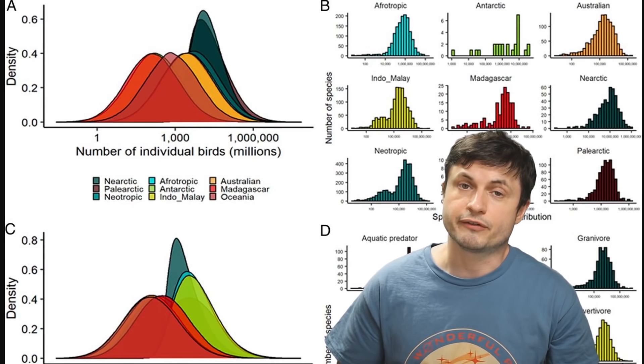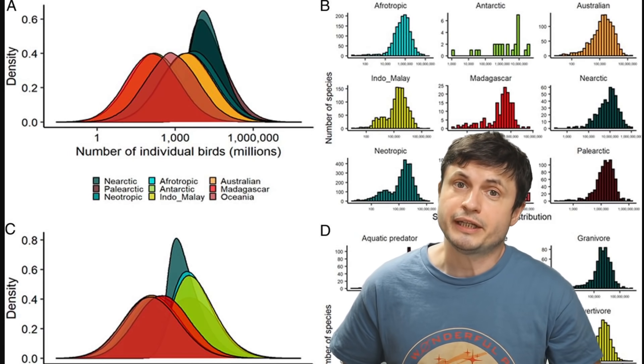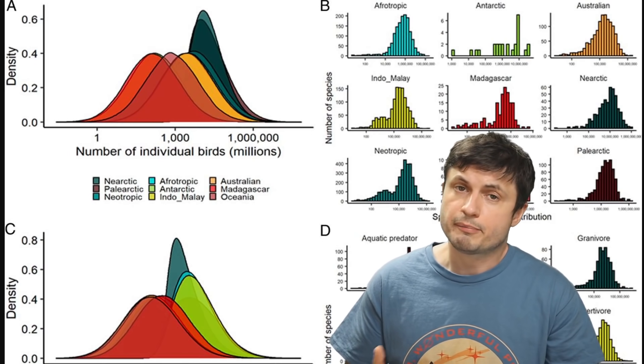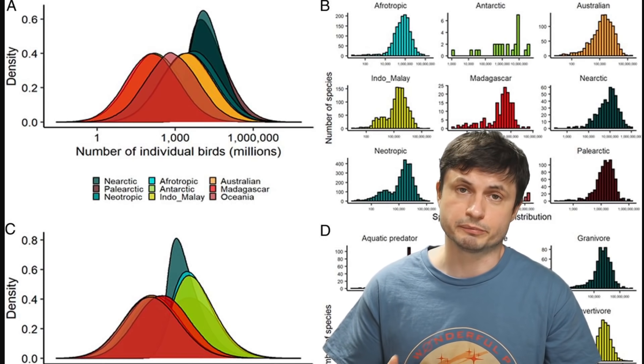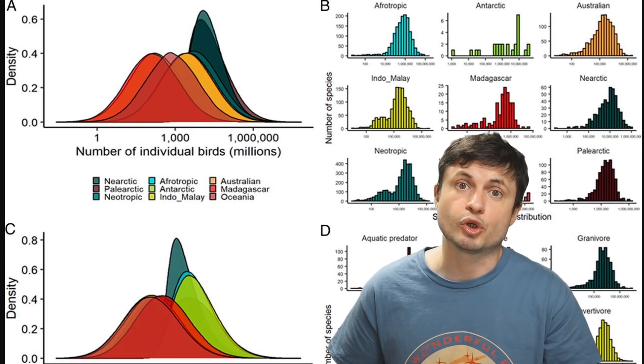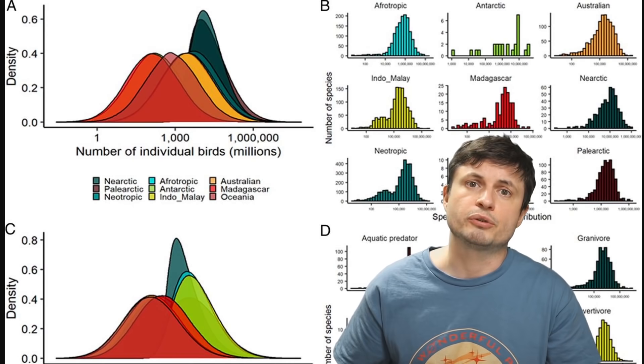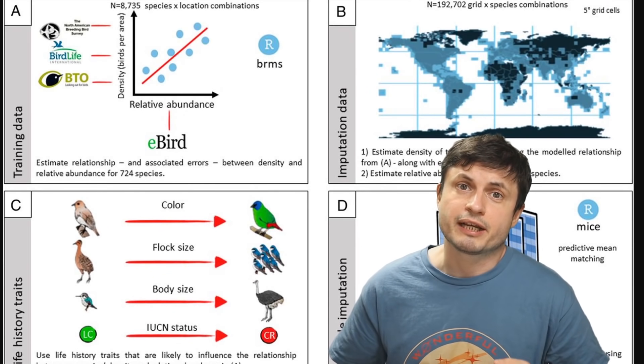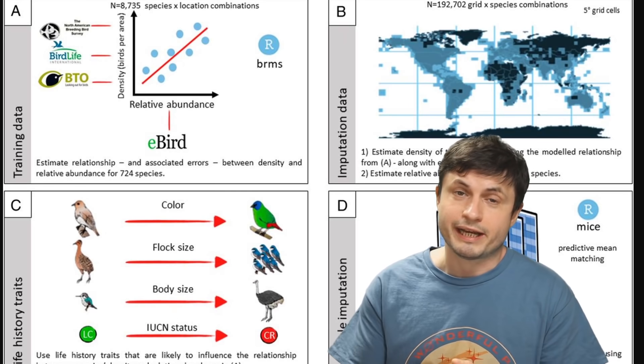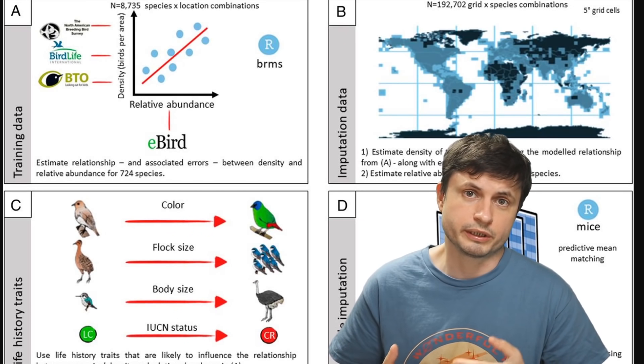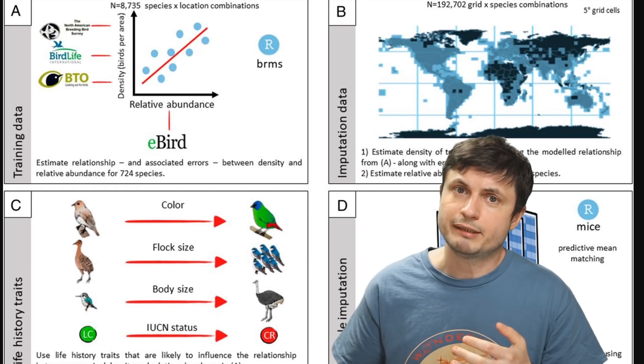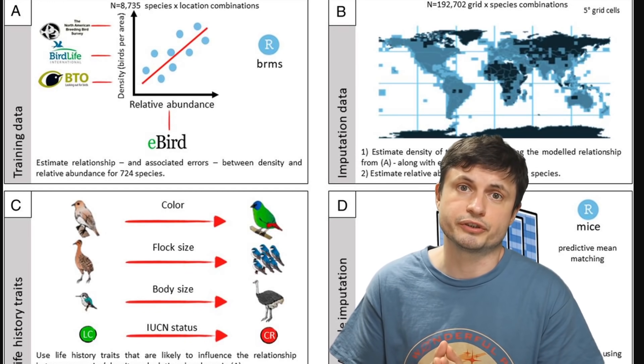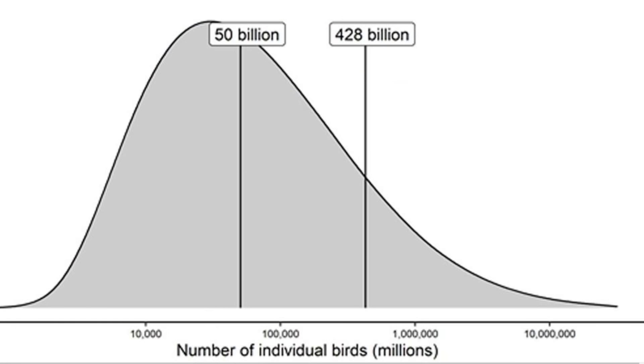And so by using the extensive data from this eBird project, the scientists in this paper worked out the approximate number of various species on the planet, and then the approximate number of each of those species depending on their distribution. And then by combining the available data with an algorithm to estimate the numbers of birds where the numbers are not available, they were able to get an estimate of total birds around the world. Here's what the result looks like on a graph. With the mean being about 50 billion, but the potential median being about 428 billion.